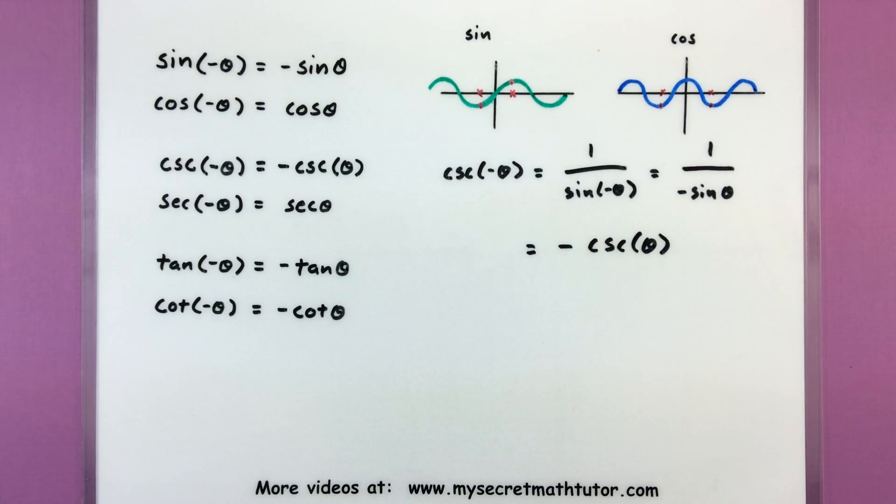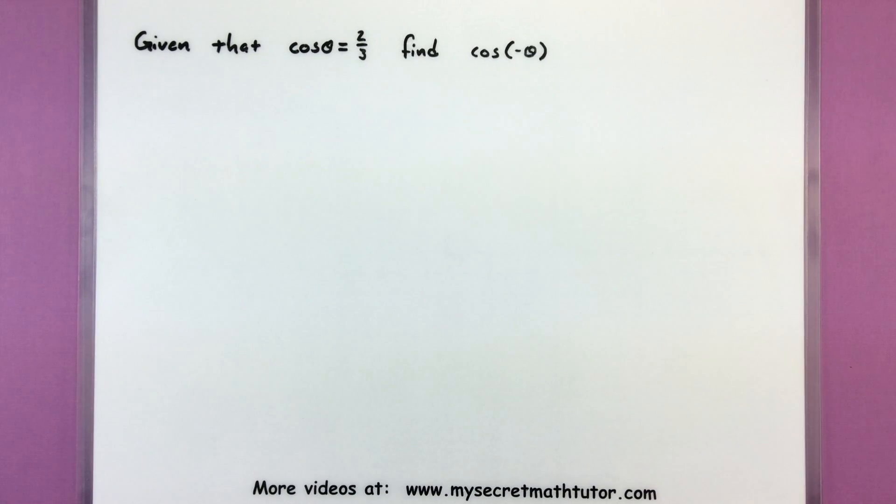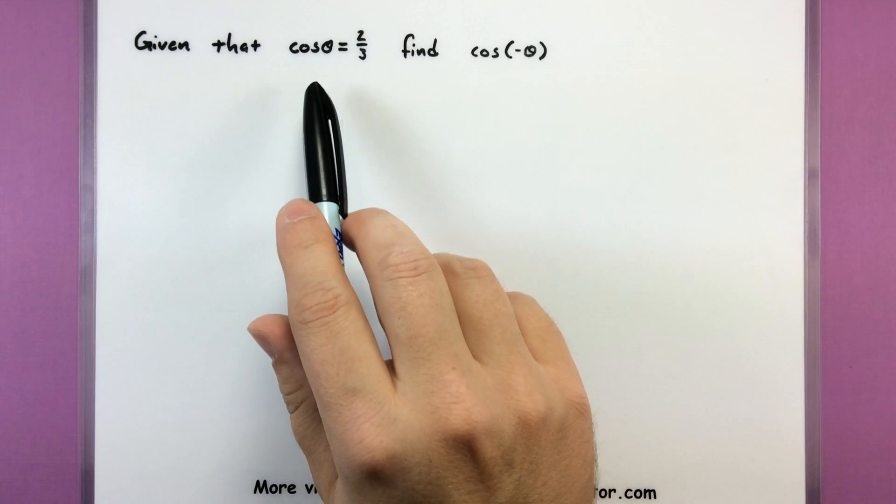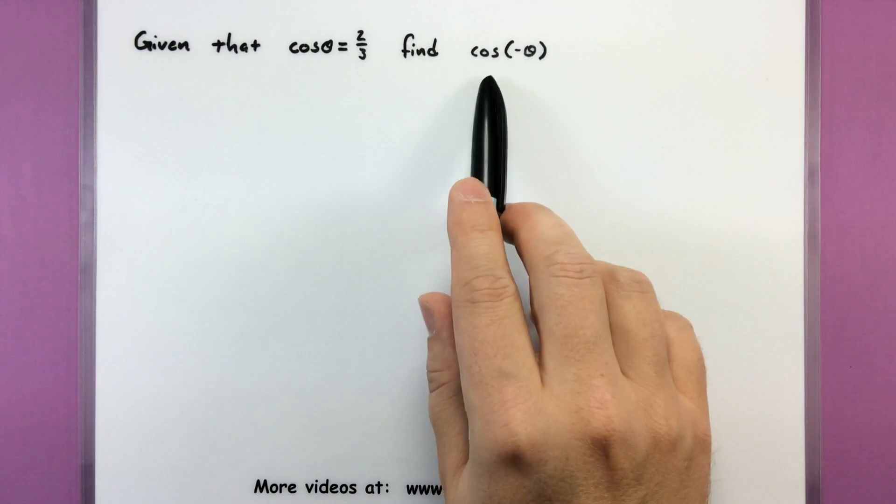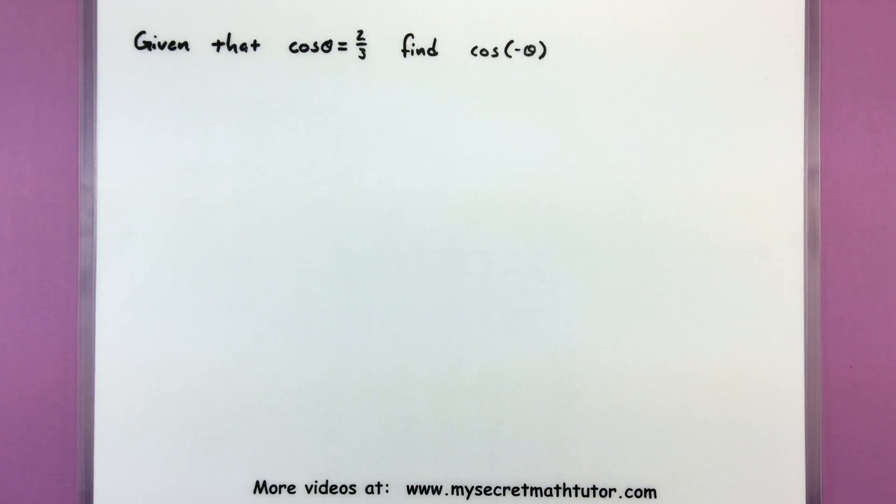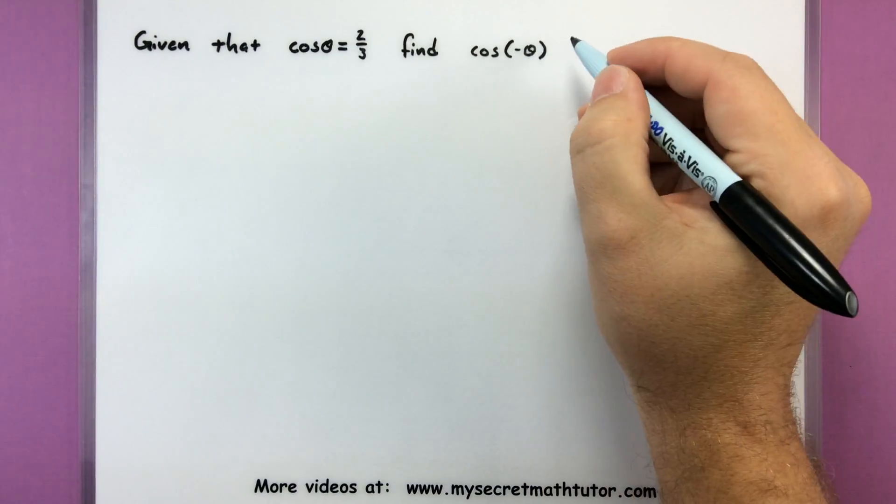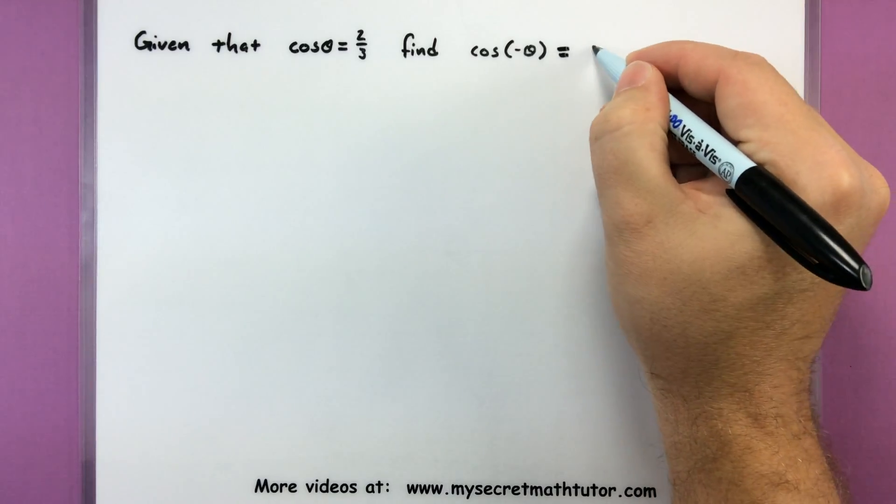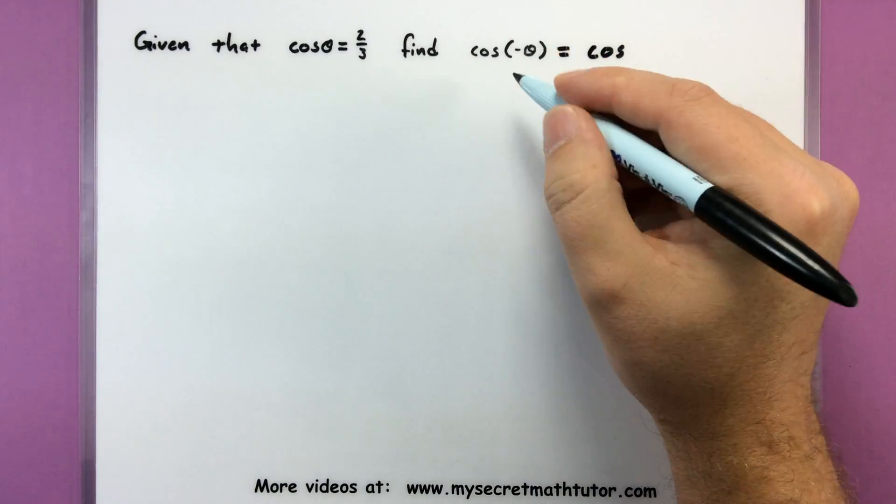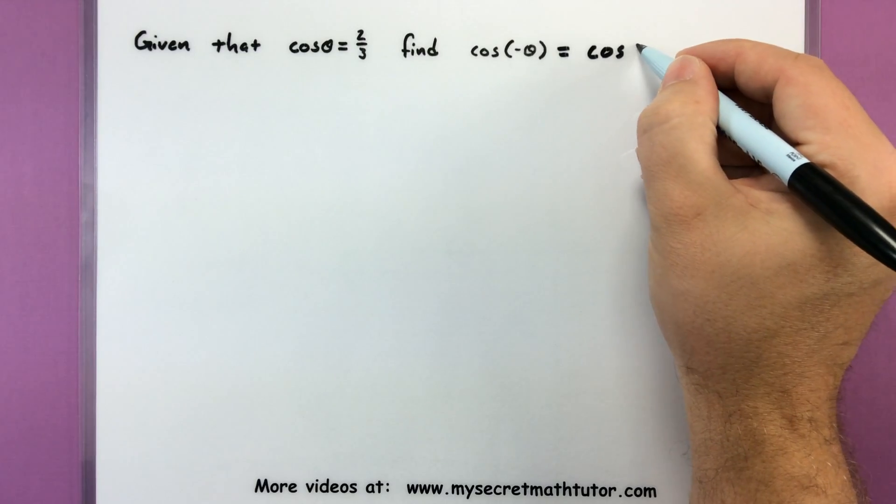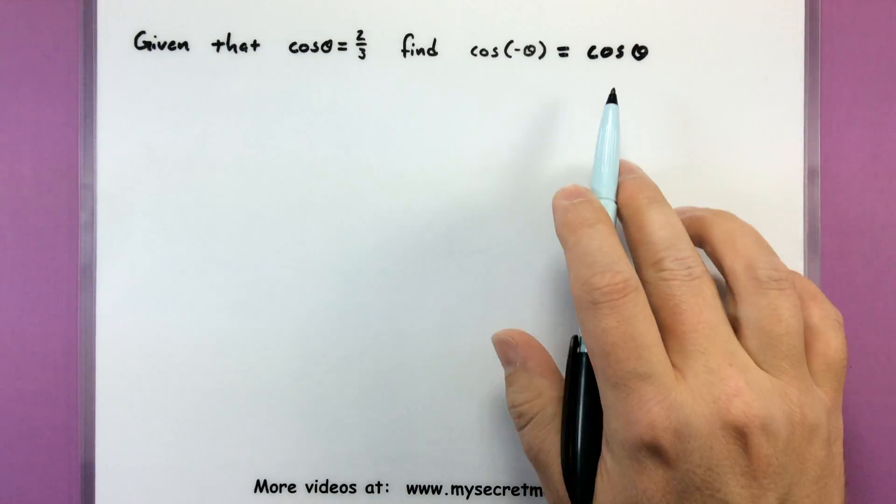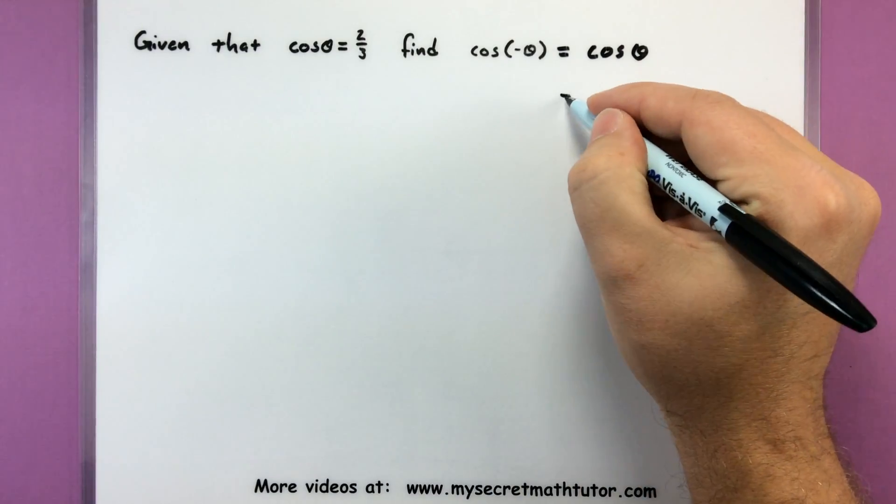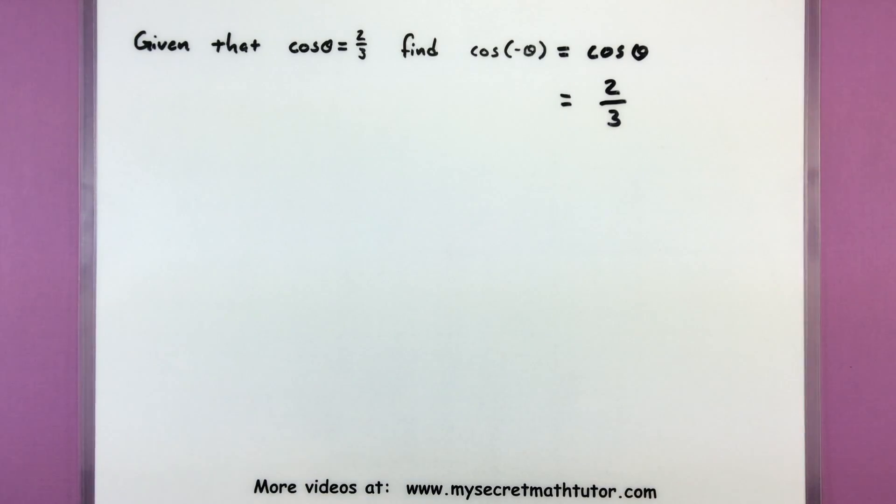All right, let's get into some examples using these, and see how they can be especially useful. So let's suppose that we know that the value of cosine of an angle is two-thirds, and I want to know what is the value of cosine of negative theta. So if I want to figure out the value of this, then I'm going to use my identities. For cosine, if I'm looking at cosine of negative of the angle, it's simply equal to cosine. So in this instance, I'll get the exact same value as what I was given. So cosine of negative theta is simply two-thirds.